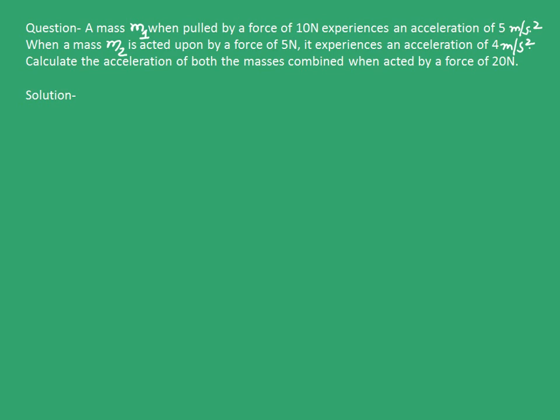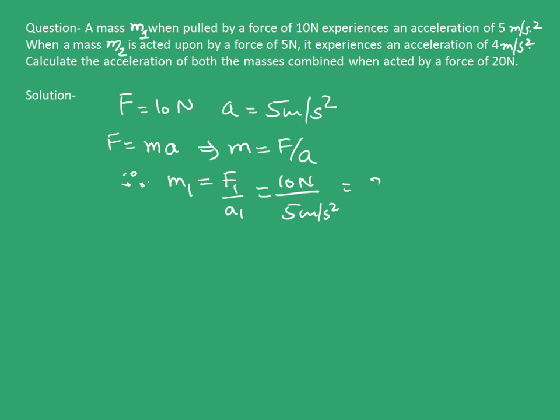We will apply the concepts we learned earlier. Initially, we need to find mass M1 and M2. Force equals 10N and acceleration equals 5 m/s². Since F = ma, mass equals force upon acceleration. Therefore, M1 is F1 upon A1, that is 10N upon 5 m/s², which equals 2 kg.